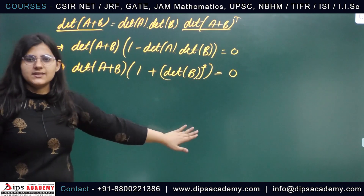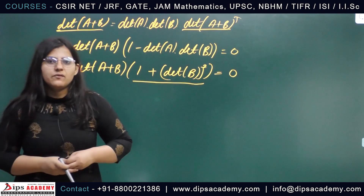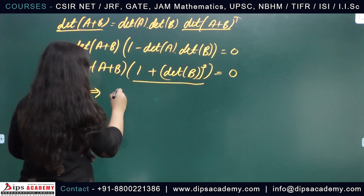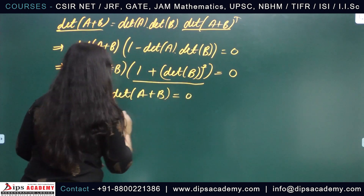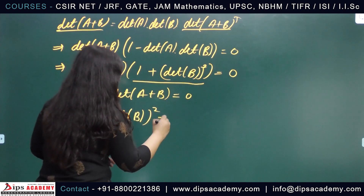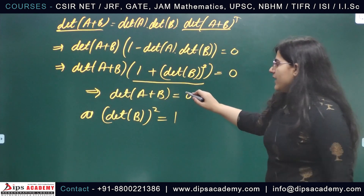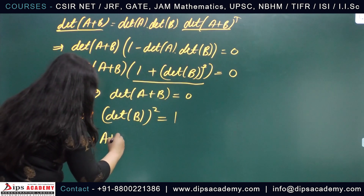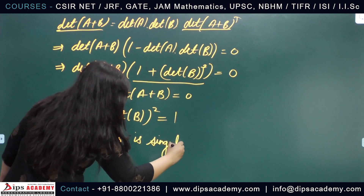The product of these two terms is 0, but the second term (1 + det(B)²) is never 0, since det(B) can be 1 or −1, making this term equal to 2 in either case. Therefore det(A + B) = 0, since det(B)² = 1. So det(A + B) = 0, which implies A + B is a singular matrix. Statement A is correct.